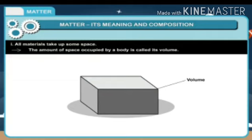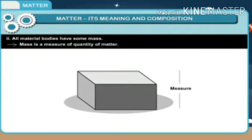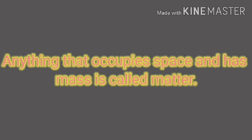First, all materials take up some space. The amount of space occupied by a body is called its volume. All material bodies have some mass. Mass is the measure of quantity of matter. From this we conclude that anything that occupies space and has mass is called matter.